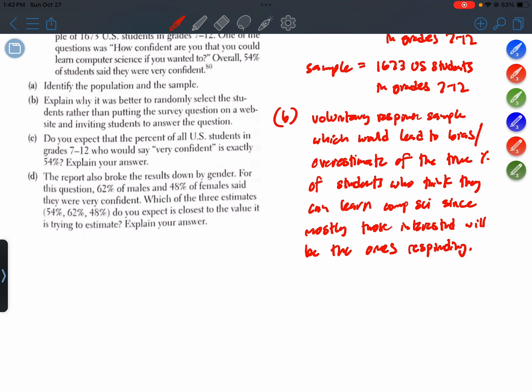All right. Part C. Do you expect that the percent of all U.S. students in grades 7 to 12 who would say very confident is exactly 54 percent? Explain your answer. OK, so no, I don't. In fact, this 54 percent is just an estimate from one sample.